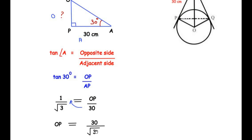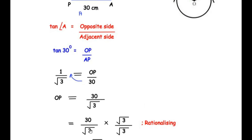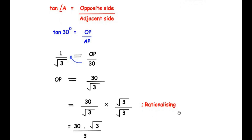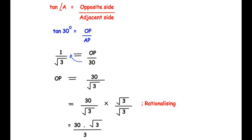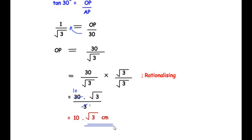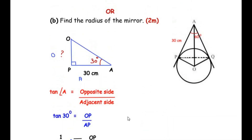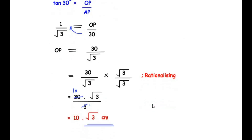Since there is a square root in the denominator, we rationalize by multiplying numerator and denominator by √3, giving 30√3 over (√3 × √3), which is 30√3 over 3. Since 3 divides 30 giving 10, the radius OP equals 10√3 centimeters. I hope you understood all the steps and found this video useful. Check out these playlists for more examples, like, share, and subscribe to my channel. Thank you for watching.